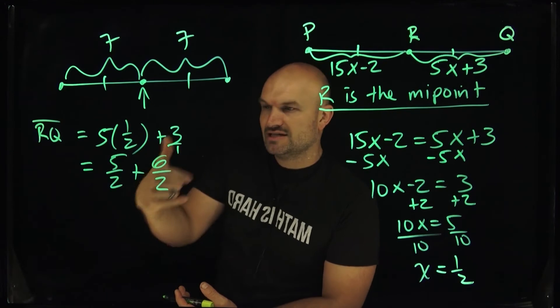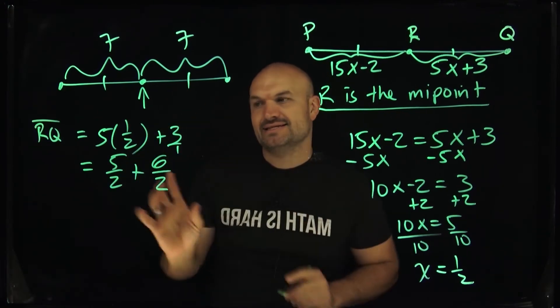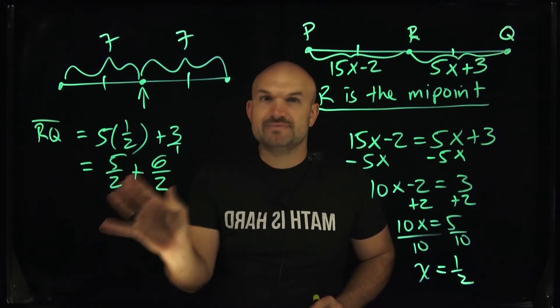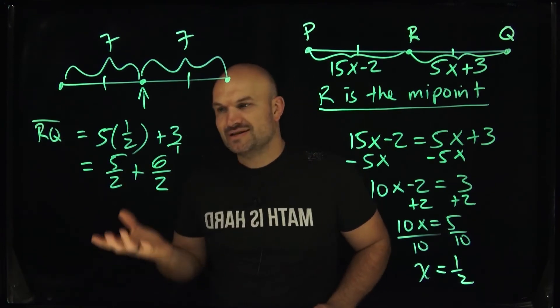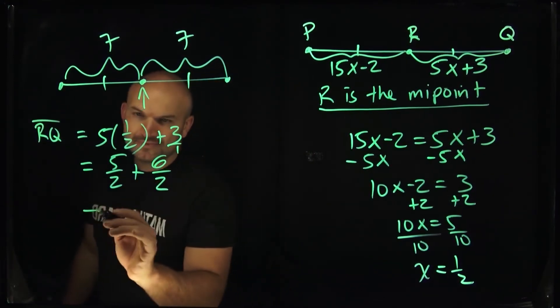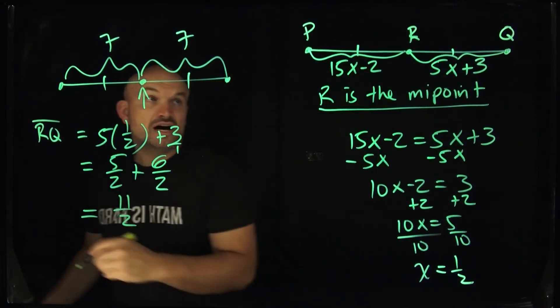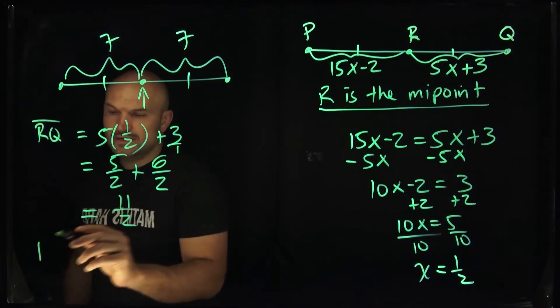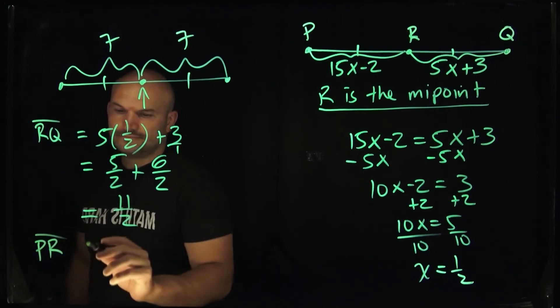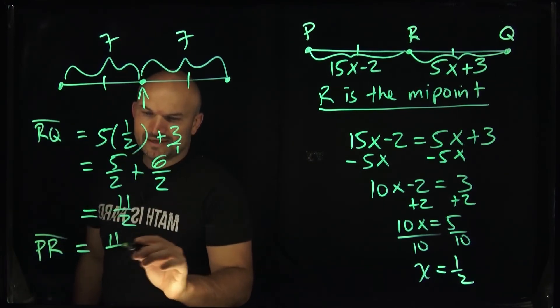Right, so it's the same thing. Like 6 over 2 is the same thing as 3. Now, why did I write it like this? The reason why I wrote it like that is so I can get the denominators to be the same. Because remember, if you're going to add fractions, you've got to have the denominator to be exactly the same. So in this case, I'm going to have 11 halves. And now, if I want to find the length of PR, so PR, then that is also going to be 11 halves.